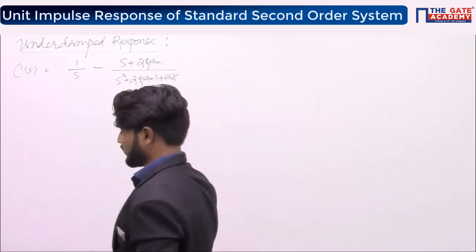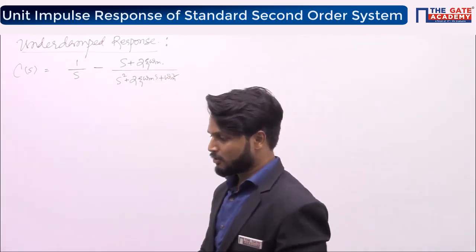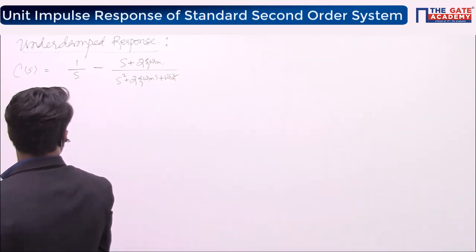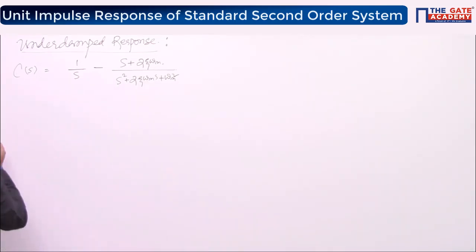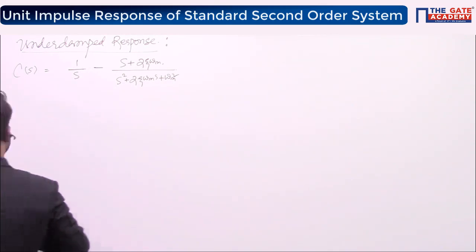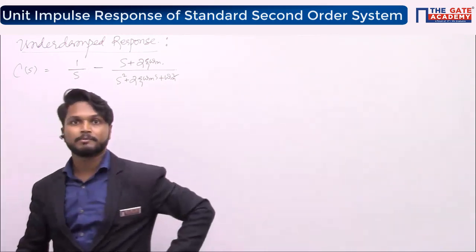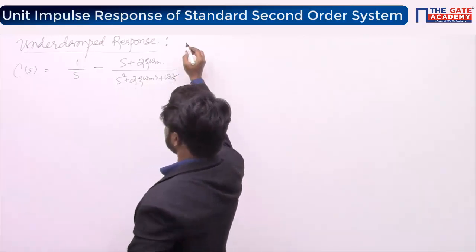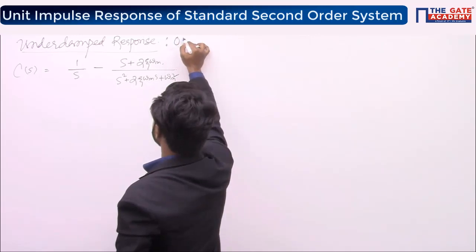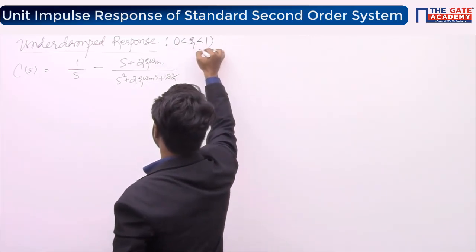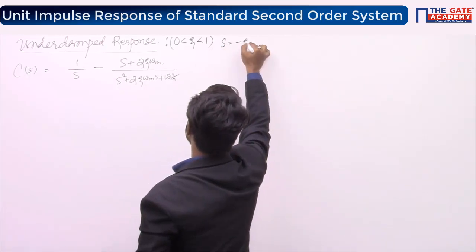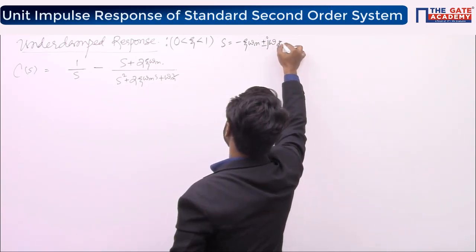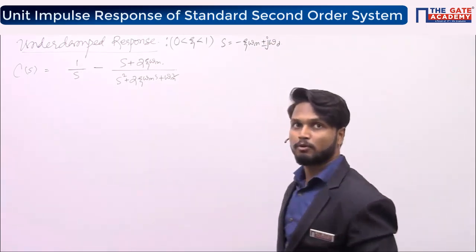You got C(s) to be 1/s minus (s + 2ζωn) divided by (s² + 2ζωn·s + ωn²). What are the roots in the case of under-damped response? Under-damped response means 0 < ζ < 1. The roots are s = −ζωn ± j·ωd.